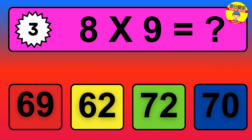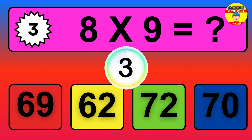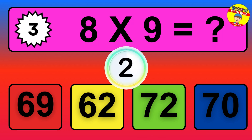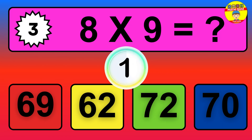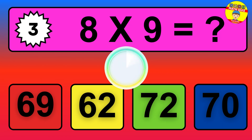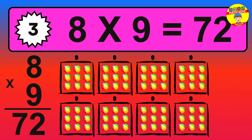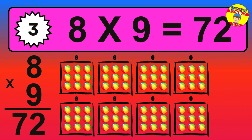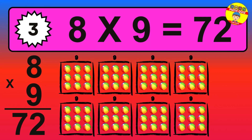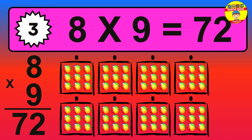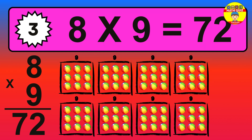Question three: eight times nine equals what? The answer is eight times nine is seventy-two. To calculate, we have eight groups with nine balls each one. So how many balls do we have? Seventy-two balls.